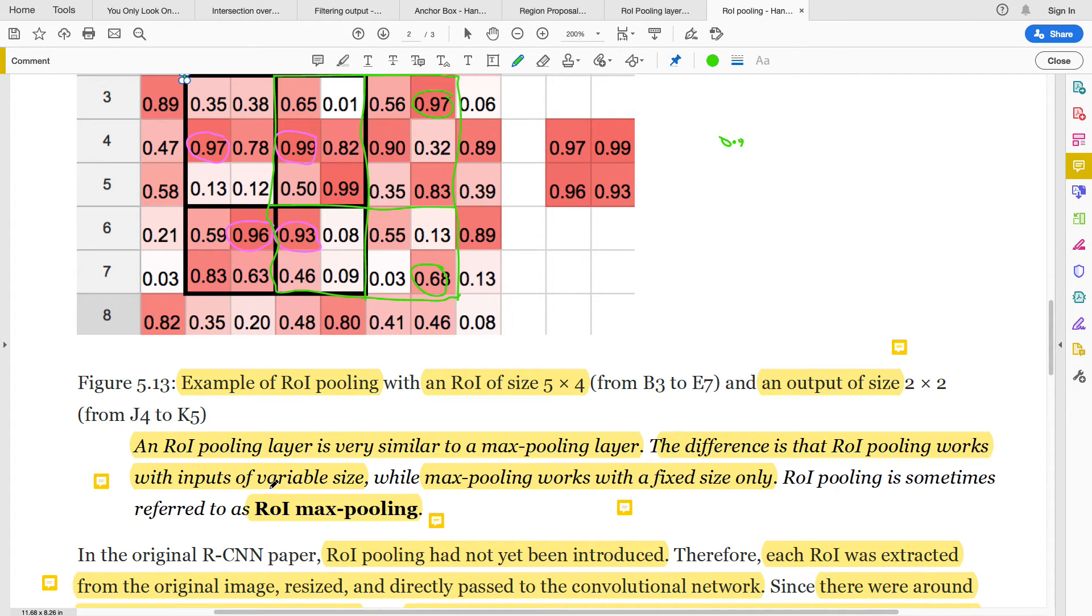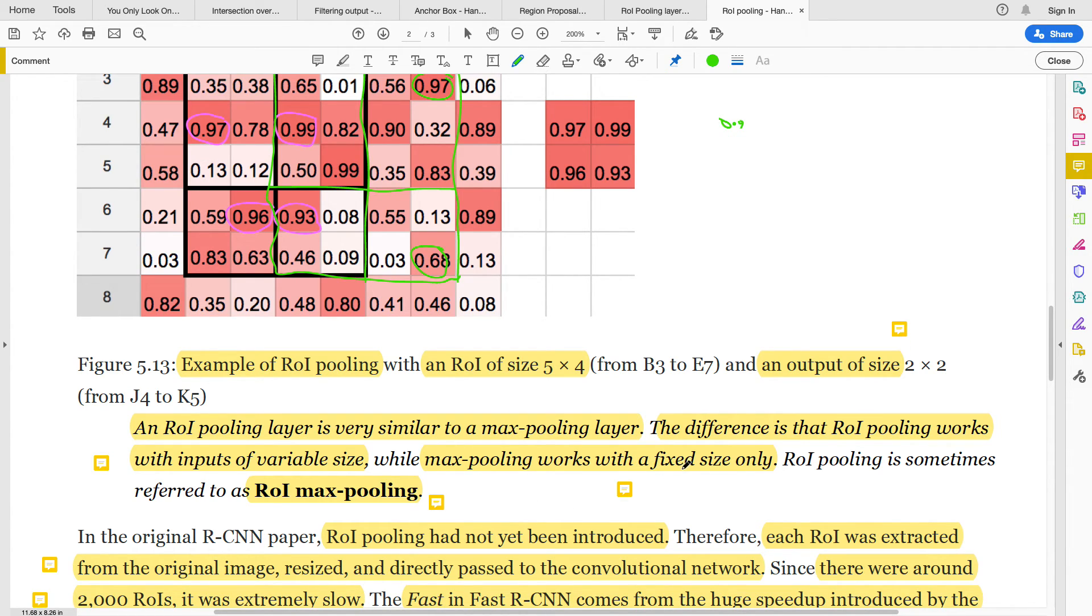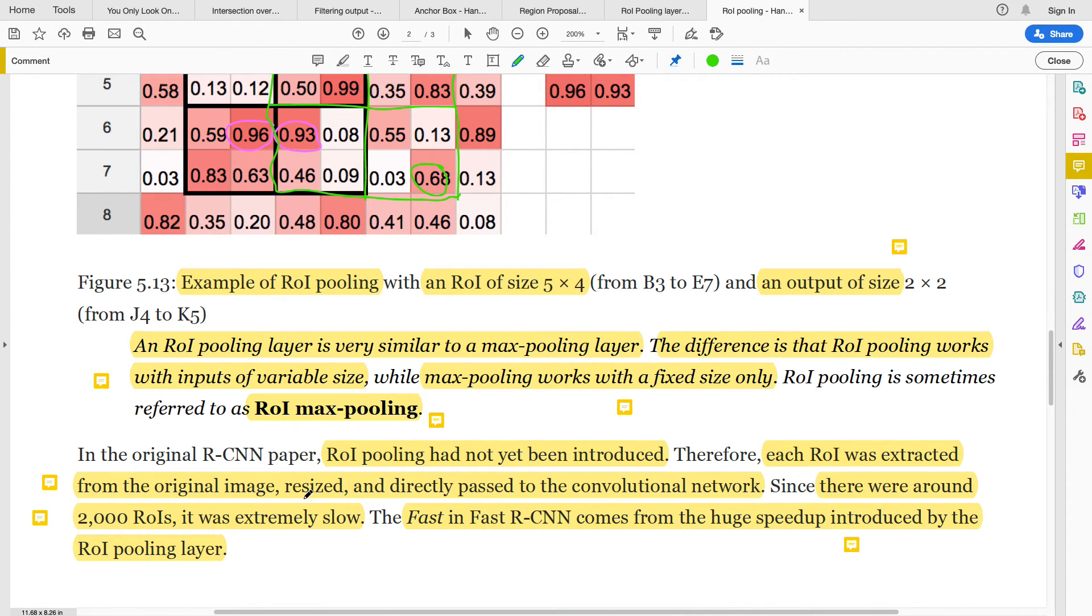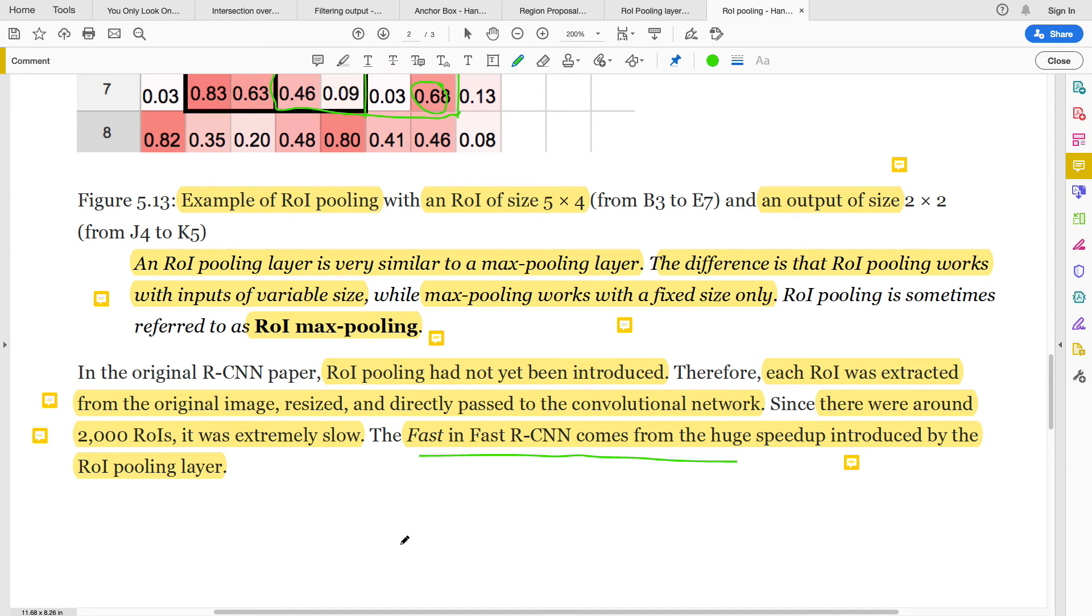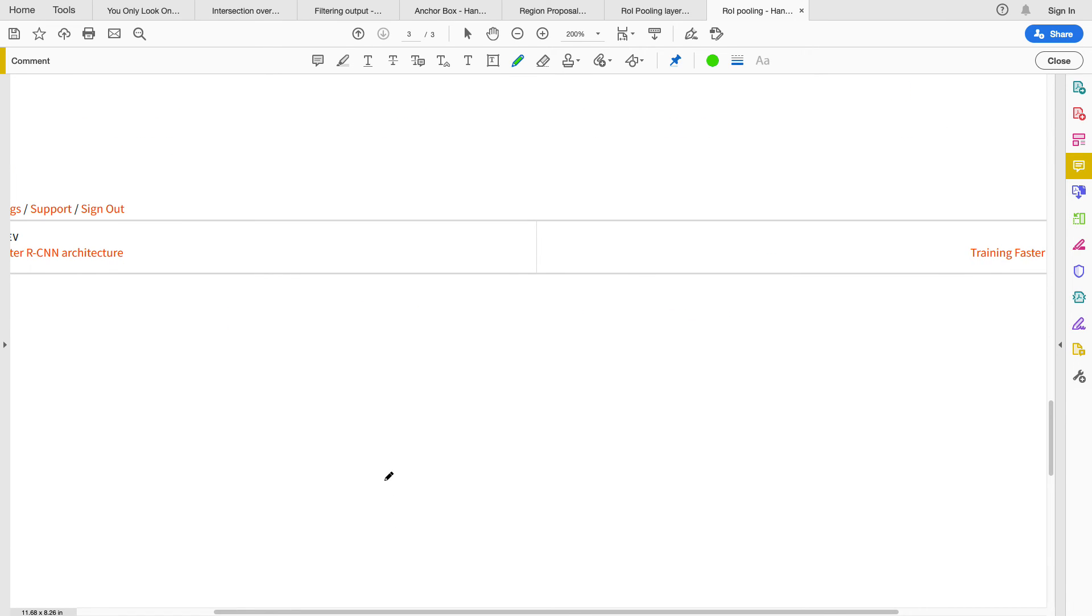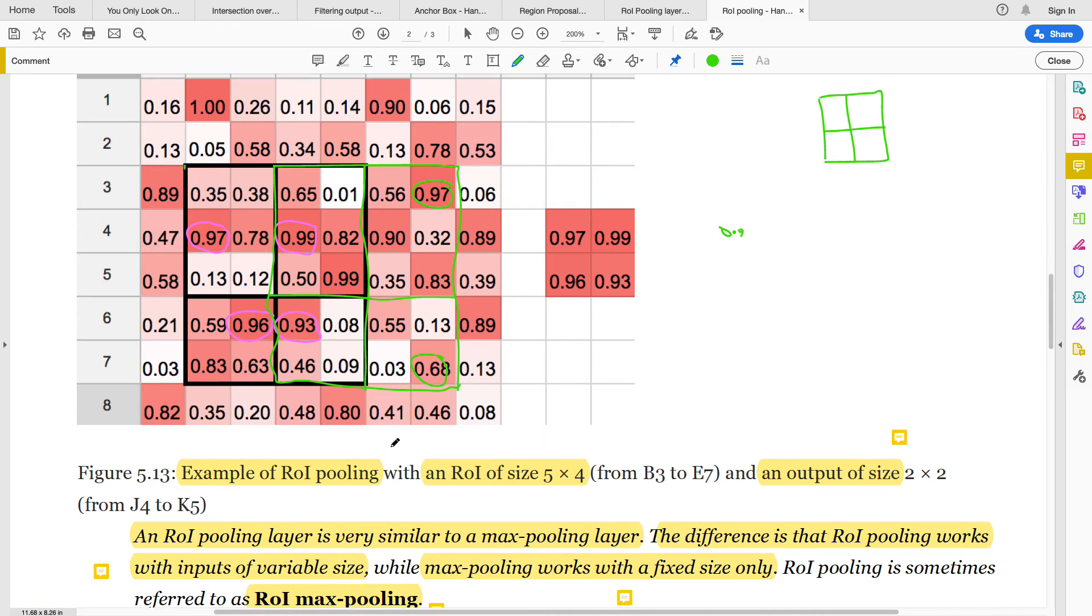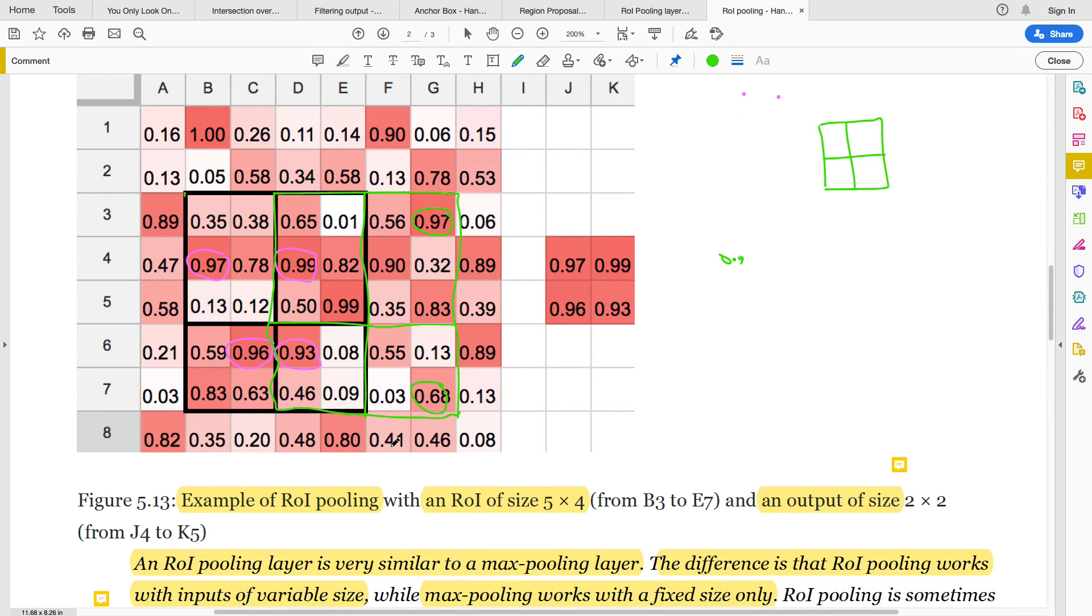That's essentially what is happening there. The ROI pooling layer is similar to max pooling. The difference is that ROI pooling works with inputs of variable size—this is 3 by 2, this is 2 by 2—but then it eventually gives us a fixed size. But max pooling works with a fixed size only. That's essentially what's happening, and because of the invention of the ROI pooling, that is the major speed up that makes the Fast R-CNN better than the previous ones.